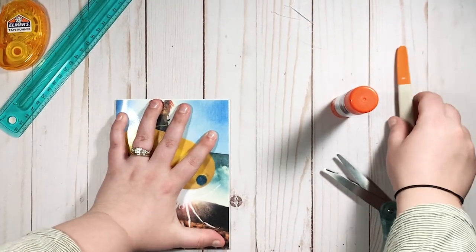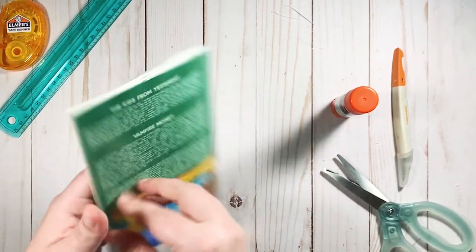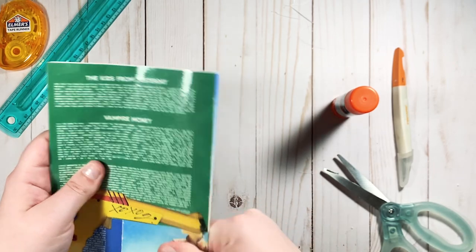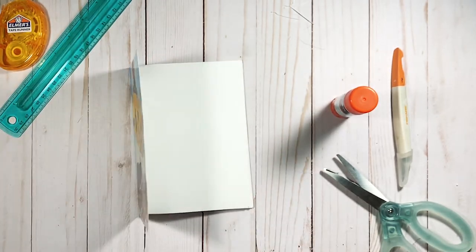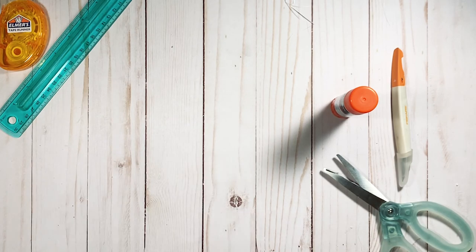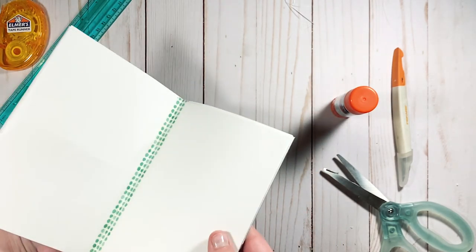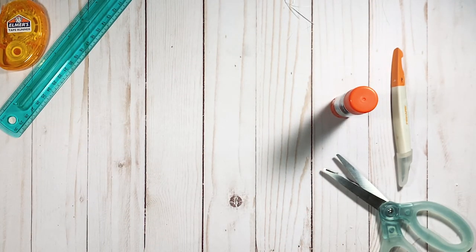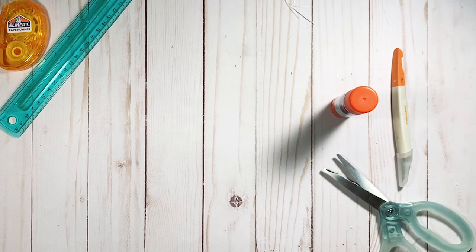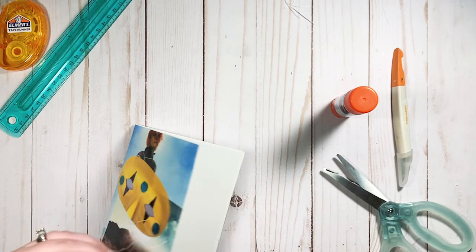Now you'll see that when I place the insert down it kind of wants to flop open. That's just because it's new—the lamination is kind of thick. Over time it will flatten out and I find that if you place like a book on top of it overnight, it really will help just kind of flatten it out if that's something that bothers you.